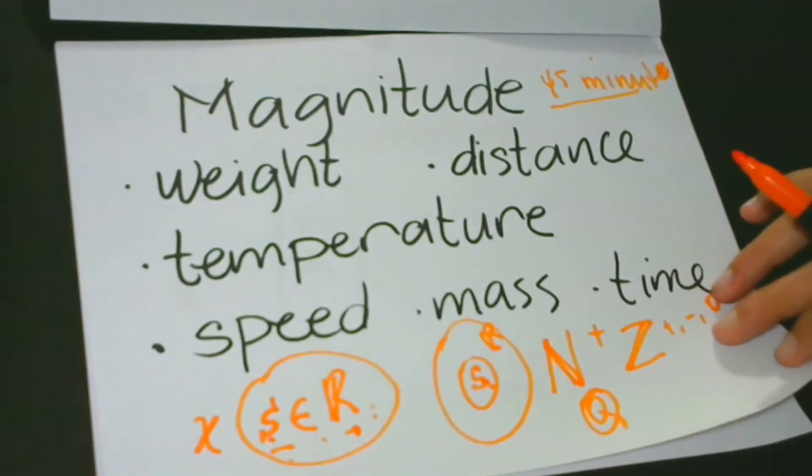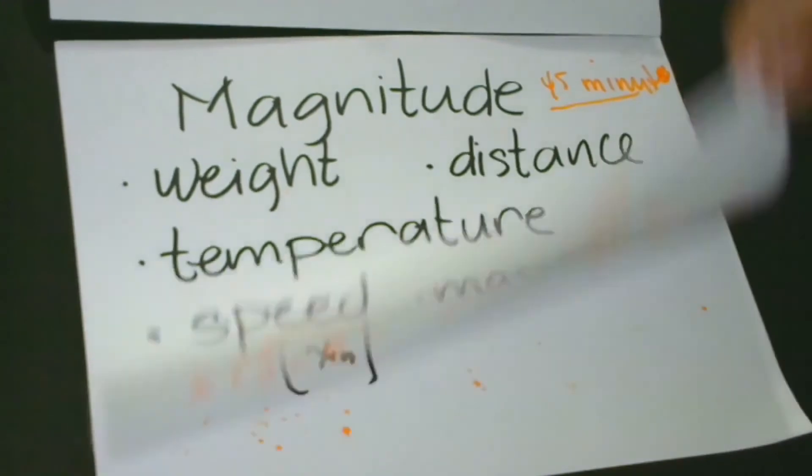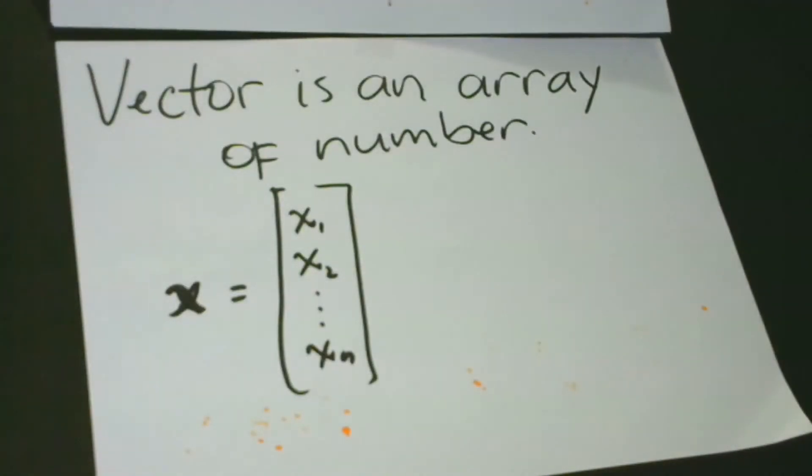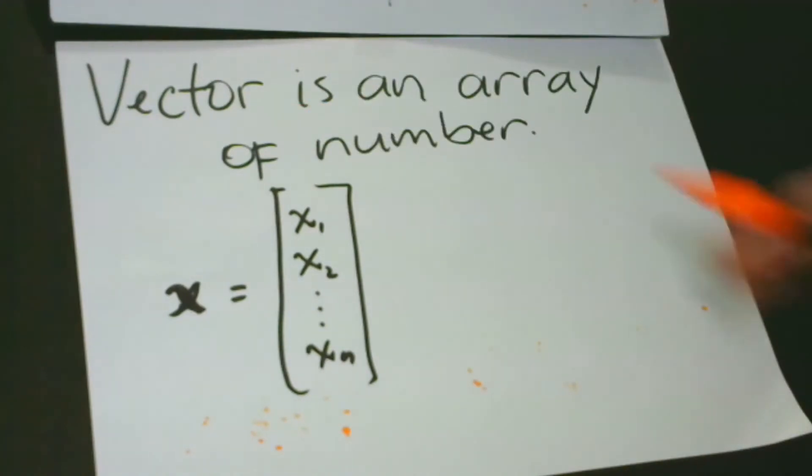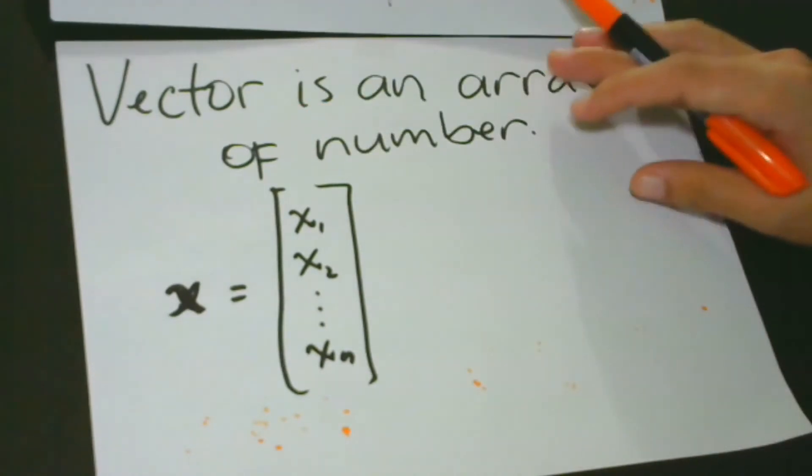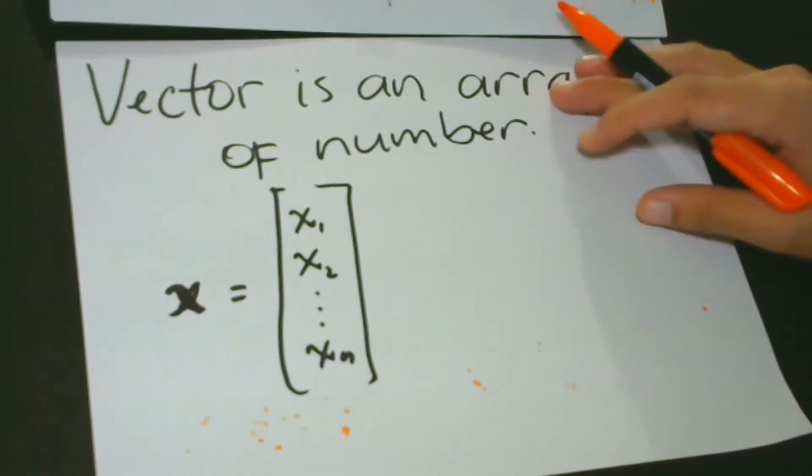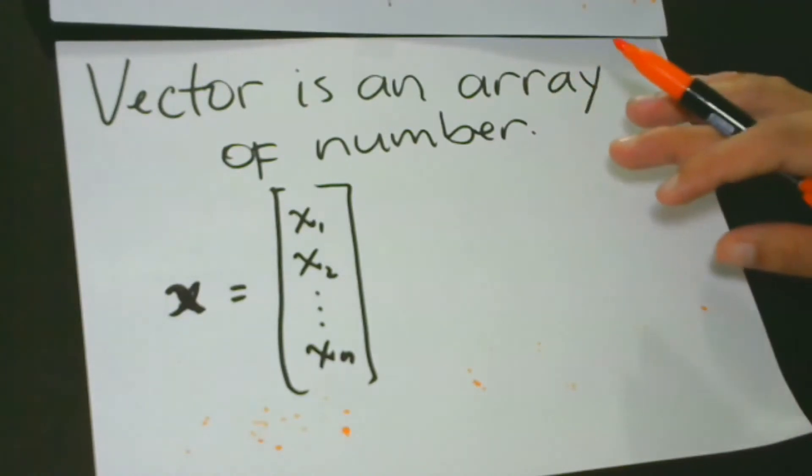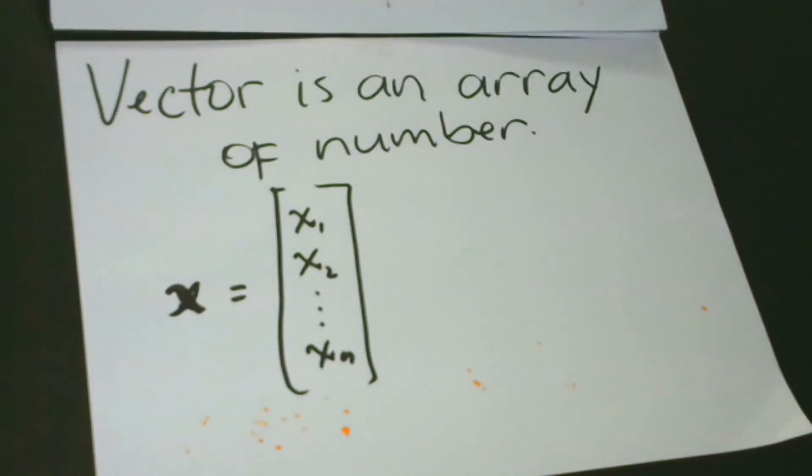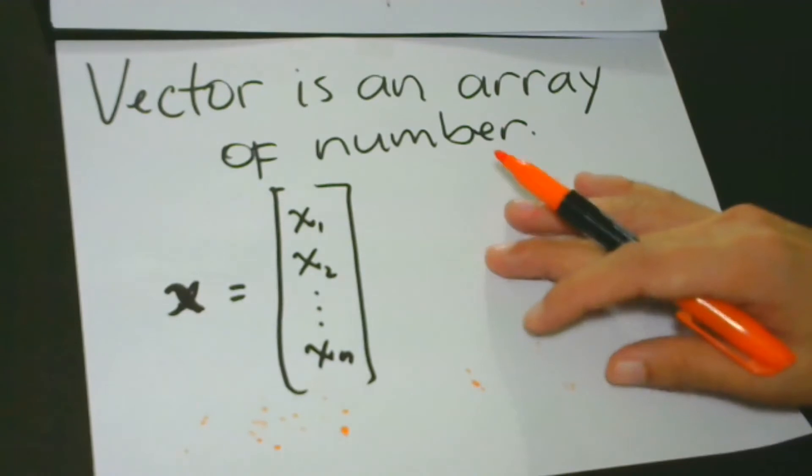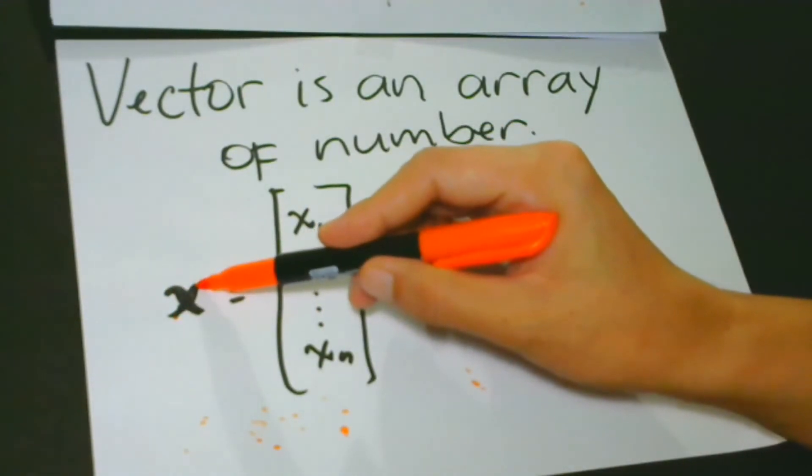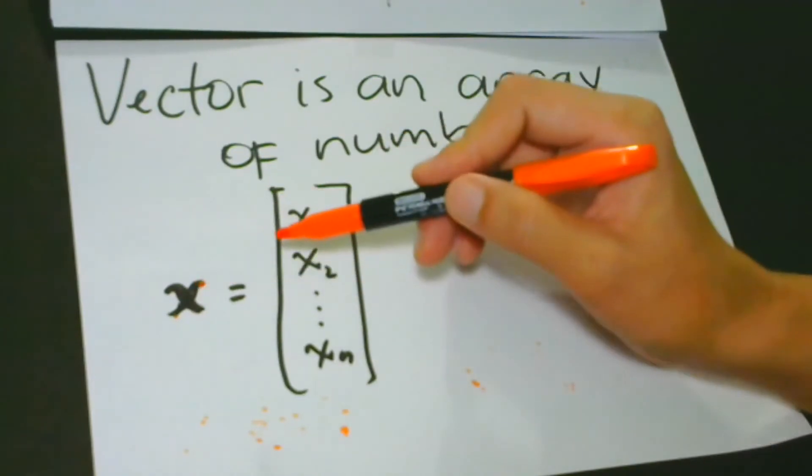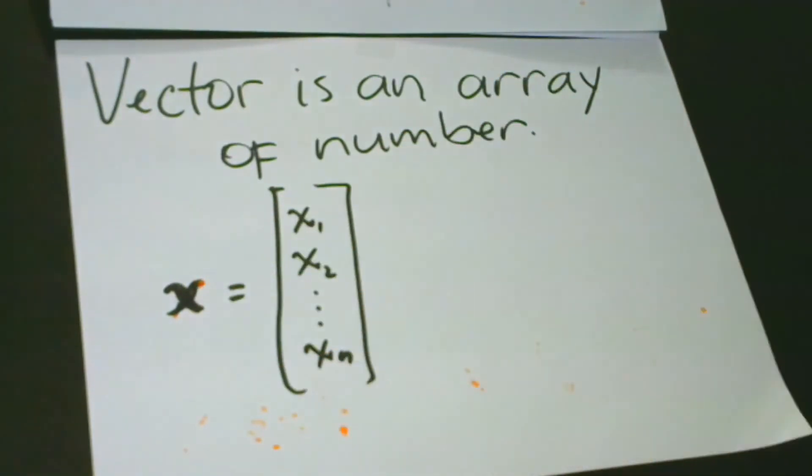Now, let's go to the vectors. Vectors is an array of numbers. This is actually a collection of all possible vectors of a particular length. Just like scalar, it is written in lowercase, but this time it is bold typeface.